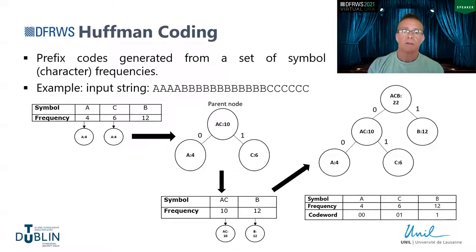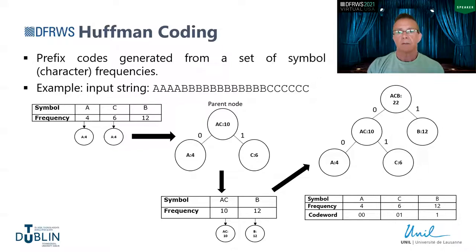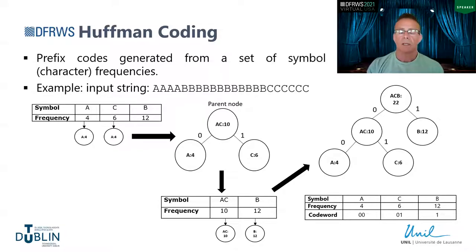Huffman coding is based on the frequencies of occurrences of input symbols — essentially the characters within the input sequences. The input sequence in our case is a malware binary. We're representing the extended ASCII set, so the maximum number of symbols within our alphabet is 256. This means the maximum feature dimension size of our vector is 256, which is markedly smaller than the feature spaces produced by LZ algorithms.